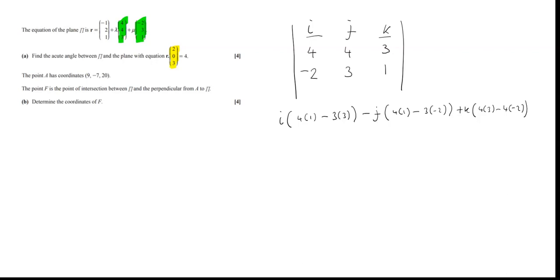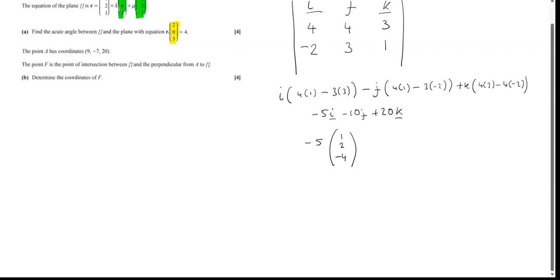Working that out: 4 minus 9 gives minus 5i; 4 plus 6 is 10, so minus 10j; and 12 plus 8 gives 20k. So the vector (−5, −10, 20) is perpendicular to the first plane. I'm going to use a simpler version by factoring out the minus 5. Because we're only interested in the direction, not the magnitude, I'll just use (1, 2, −4) as the normal direction of the first plane.